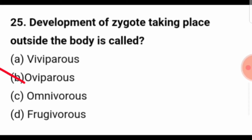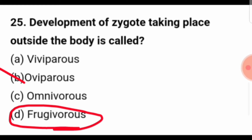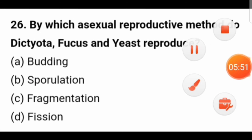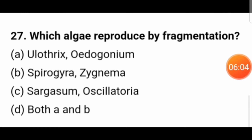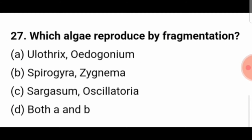The meaning of viviparous you understand. Frugivorous means fruit-eating. By which asexual reproduction method do Dictyota, Fucus and yeast reproduce? They all three reproduce by budding. Which algae reproduce by fragmentation? The algae that reproduce by fragmentation are Ulothrix, Oedogonium, Spirogyra and Zygnema — both A and B are the right answer.